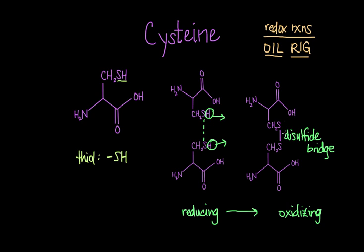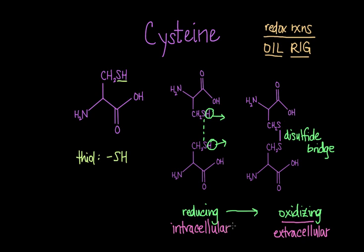The exterior of the cell, or the extracellular space, is an oxidizing environment, so it will favor the formation of disulfide bridges. But in the intracellular space, you're more likely to find a reducing environment. A helpful way to remember this: the interior of the cell has molecules called antioxidants, which — as you can tell by the name — stifle any oxidizing reactions and keep the intracellular space a reducing environment.